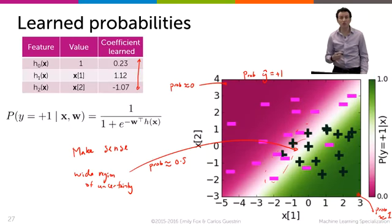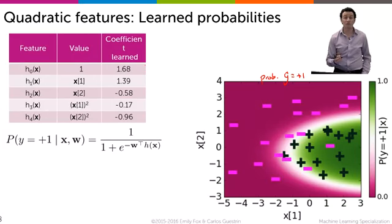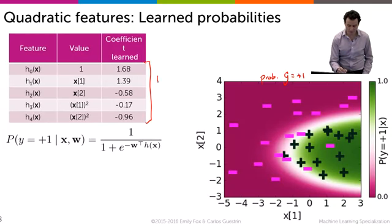Now let's look at the degree 2 polynomial fit. So what happens if we use degree 2 polynomial features or quadratic features, and learn the same classifier as we learned a few slides ago, but again plot the probability that y hat equals plus 1. As we saw from a few slides ago, we believe that this quadratic fit was actually a better fit to the data.